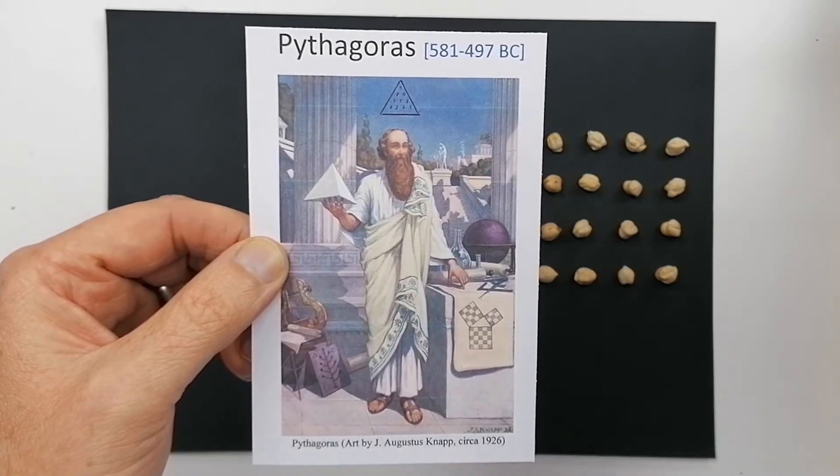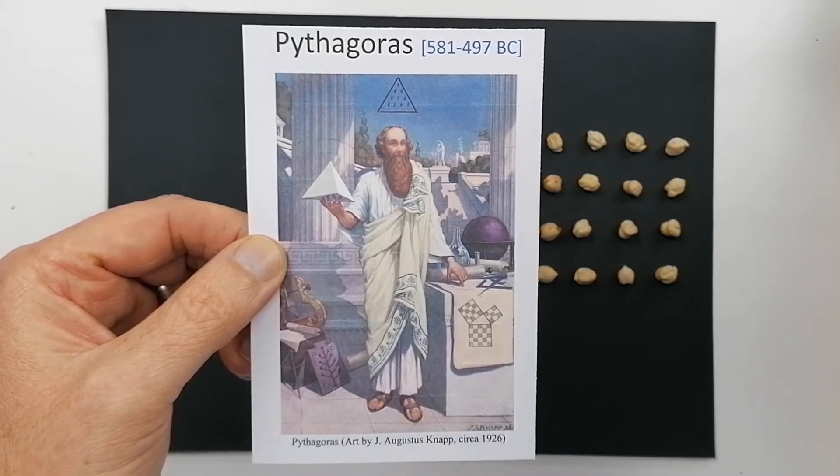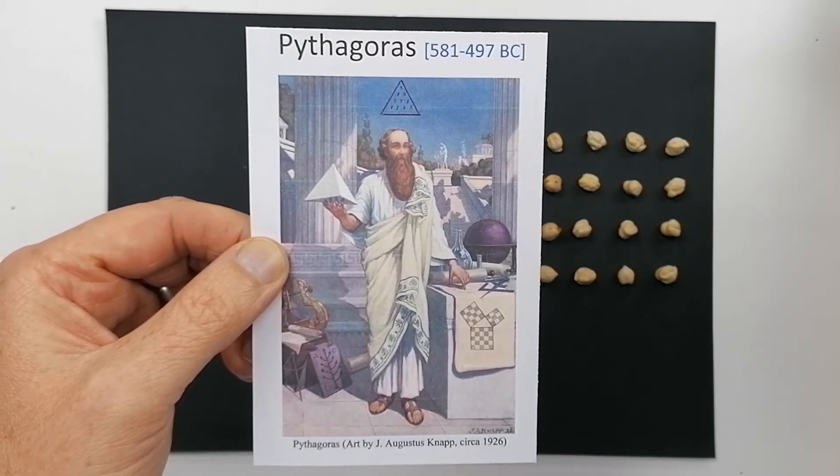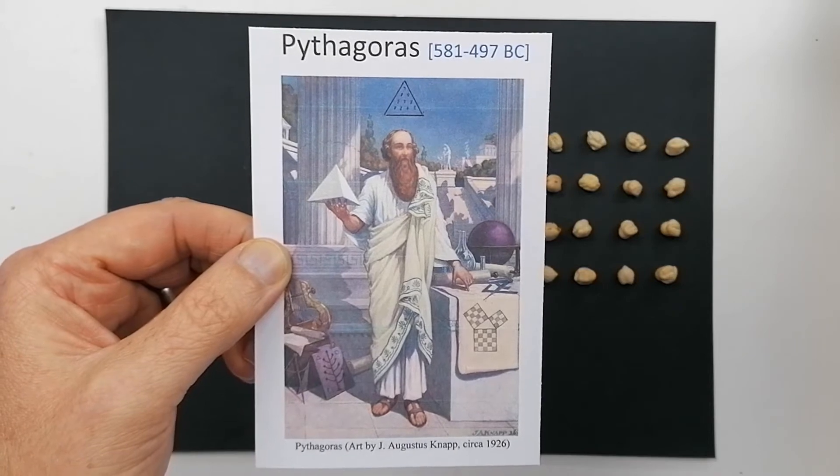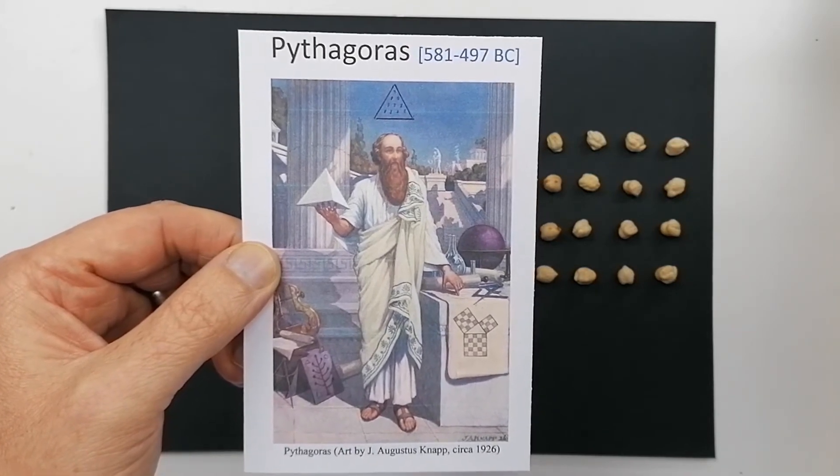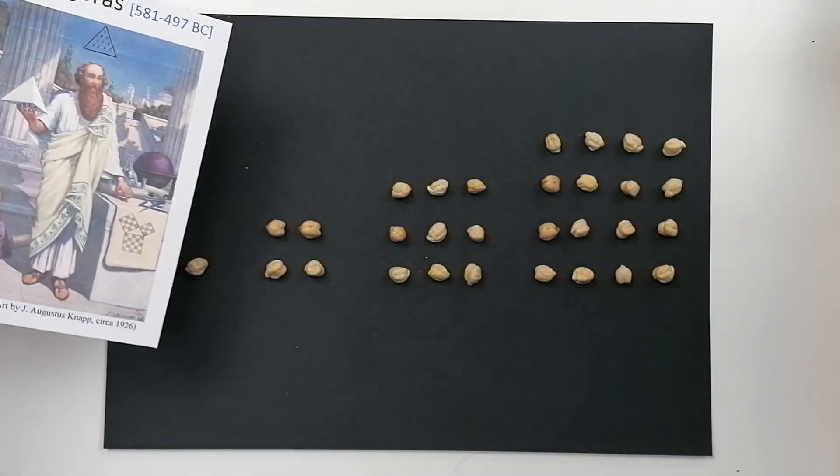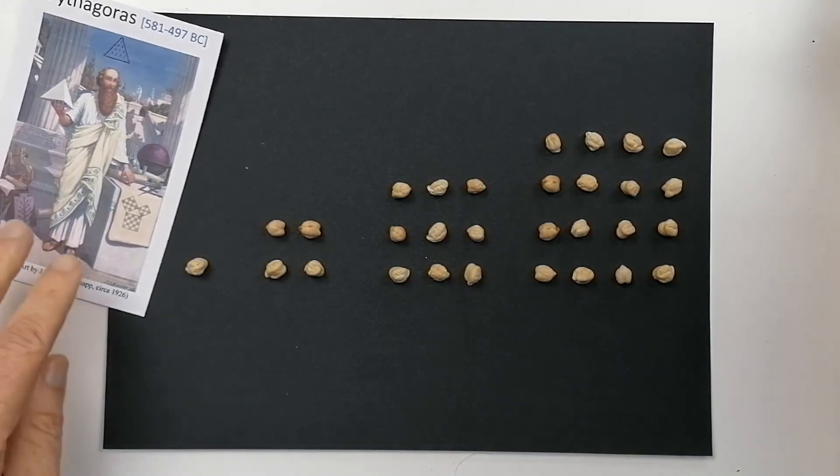But one of the things he looked at was patterns in numbers. He was a strict vegetarian because he believed in reincarnation, and for that reason he did not eat meat. And we're going to use chickpeas and beans for this pattern.